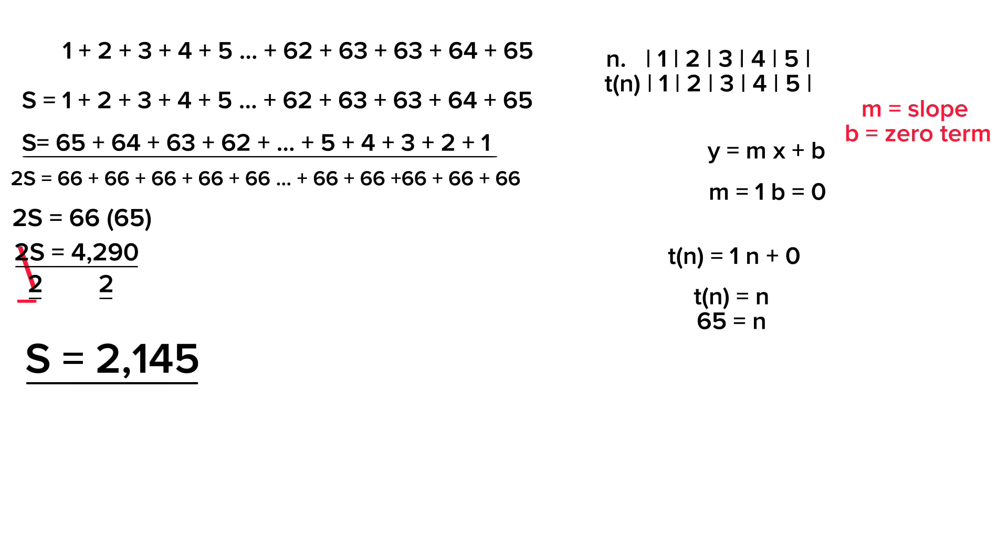That means that the sum of 1 plus 2 plus 3 all the way to 65 is 2,145. So the sum for all this is 2,145.